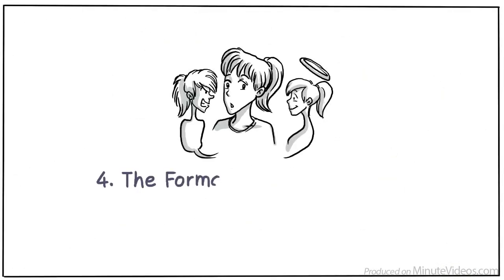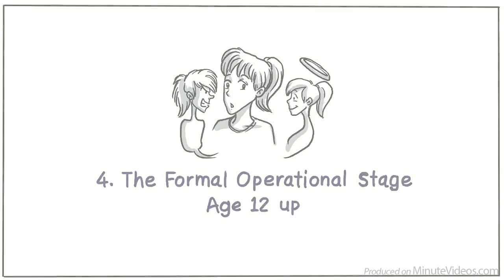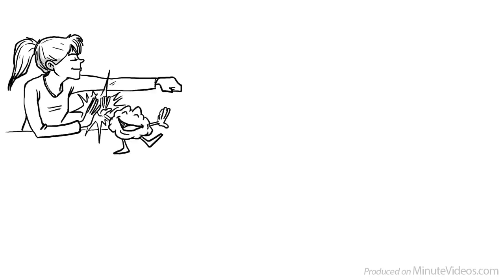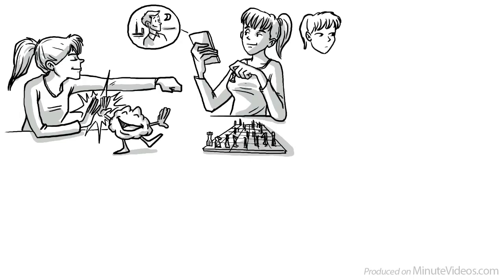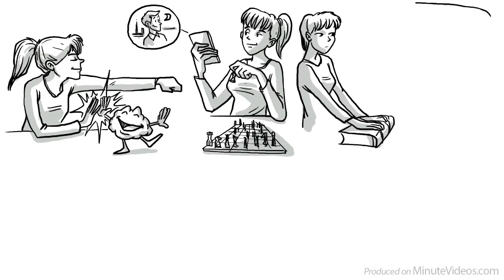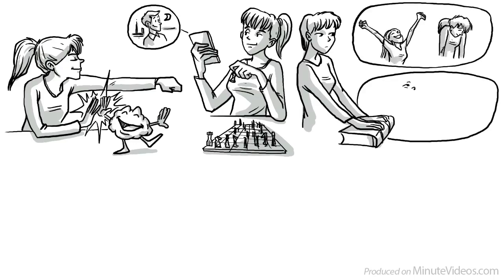Four, the formal operational stage, age twelve plus. Once we become teenagers, we become formally operational. We now have the ability to think more rationally about abstract concepts and hypothetical events. Our advanced cognitive abilities allow us to understand abstract concepts such as success and failure, love and hate.